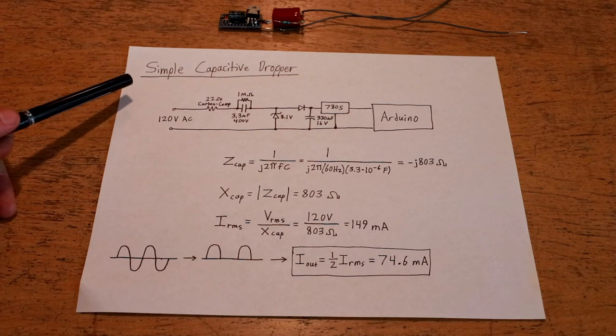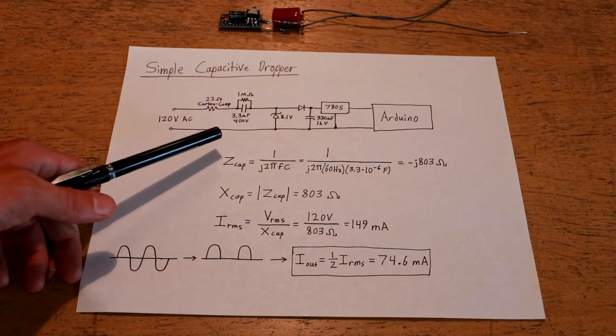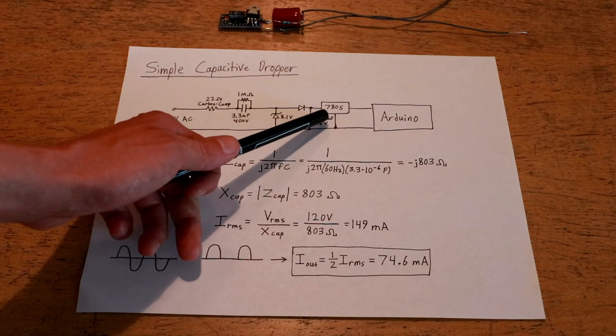Now for a capacitive dropper, the main benefit is it does not require any active switching electronics to produce a fixed DC output.